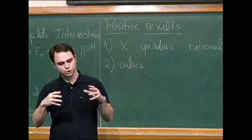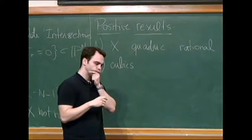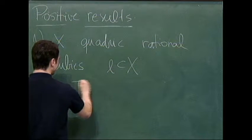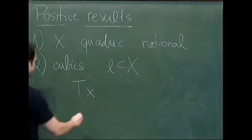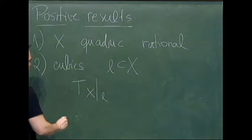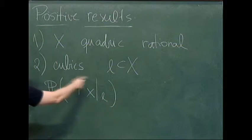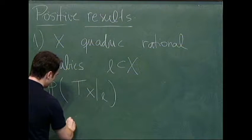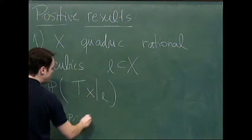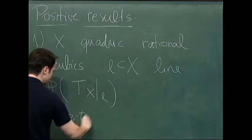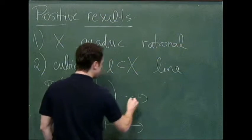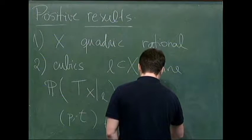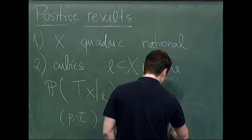But it turns out as soon as you're a cubic surface, you will contain a line. So if L is a line inside the cubic surface, you can restrict the tangent bundle to the hypersurface to L. And so the projectivization of this bundle will consist of points P in this line, and T, a tangent direction.